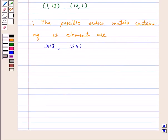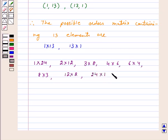So if a matrix contains 24 elements, the possible orders it can have are 1×24, 2×12, 3×8, 4×6, 6×4, 8×3, 12×2, and 24×1. And if it has 13 elements, the possible orders are 1×13 and 13×1.